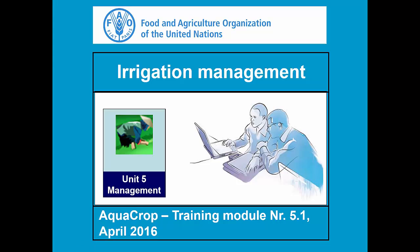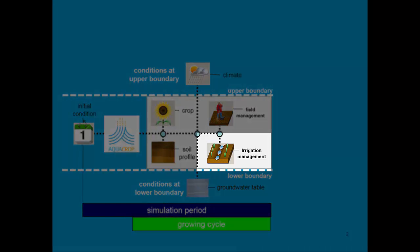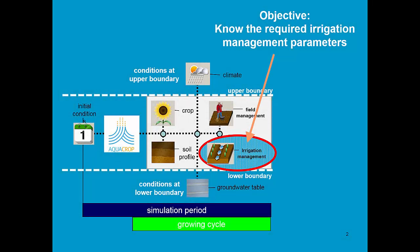Training module 5.1 - Irrigation Management. AquaCrop describes the interaction between crop and soil, and in this training module we are going to see the effect of management and more precisely irrigation management. The objectives are to know the required irrigation management parameters required by AquaCrop. They differ depending on the irrigation mode.